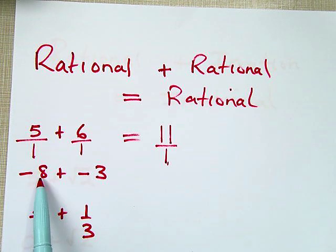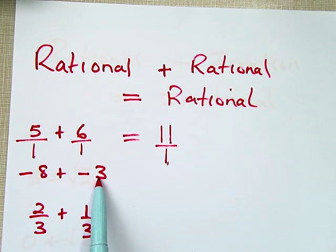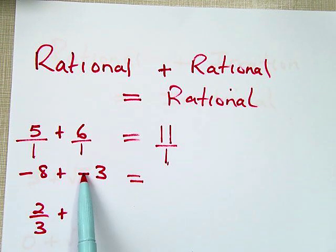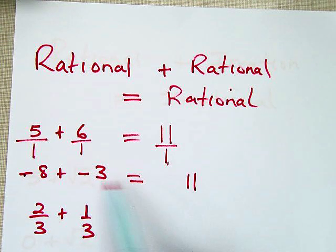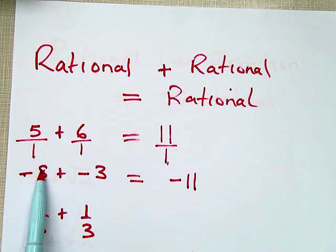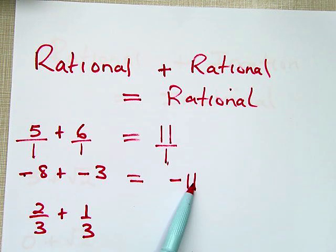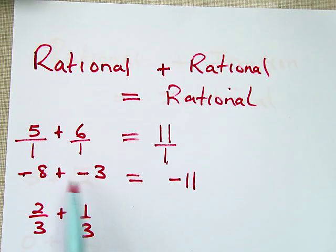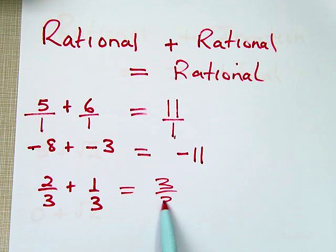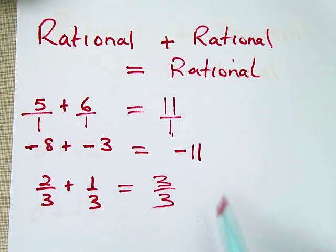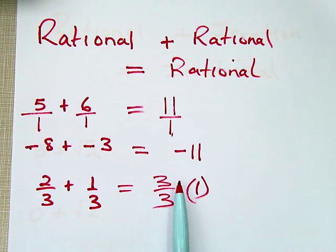Negative 8 is an integer — it's also rational. When you add negative 8 and negative 3, remember the rule: if the signs are the same, add the numbers together. So we get 11 and keep the negative sign. Rational plus rational gives me rational. Even adding fractions like 2/3 plus 1/3 gives us 3/3, which equals 1. So rational plus rational always gives us a rational answer.